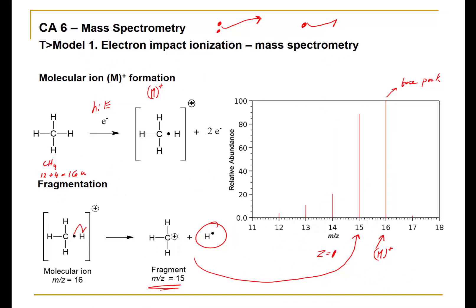In the next part of the activity, we're going to look at the significance of the M plus 1 peak. Before getting there, I wanted to return to teaching model number 1 to show a feature we did not address yet — a very small peak. Recall that the molecular ion is based on having the carbon-12 isotope, whose nominal mass is 12. What would give rise to a mass of 17 would be if we have the carbon-13 isotope present.